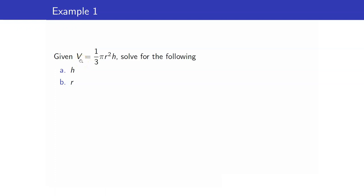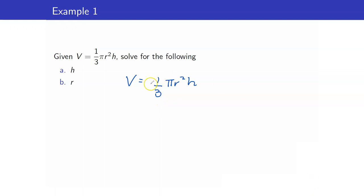For example, we are given that v is equal to one-third pi r squared h. Let us first solve for h. The first thing that I want to do is to remove this one-third. Using the multiplication property of equality, we can multiply both sides by 3. So this gets cancelled out, and we have 3v is equal to pi r squared h.